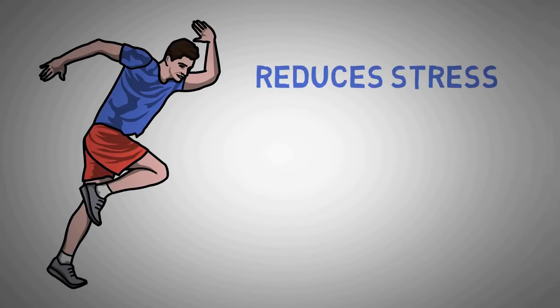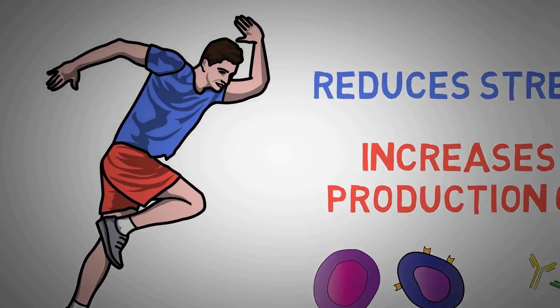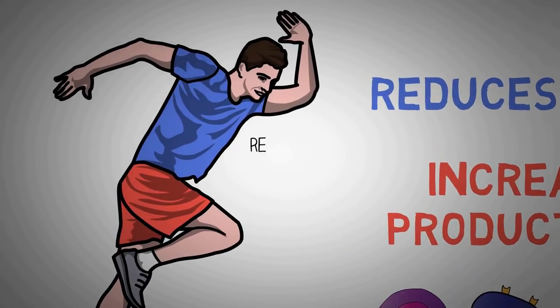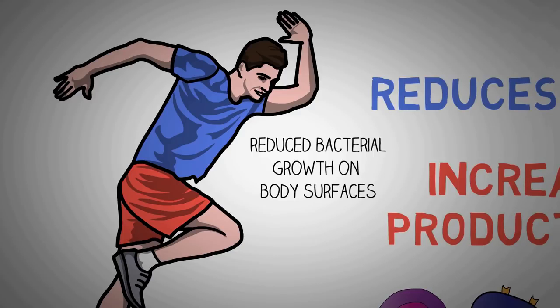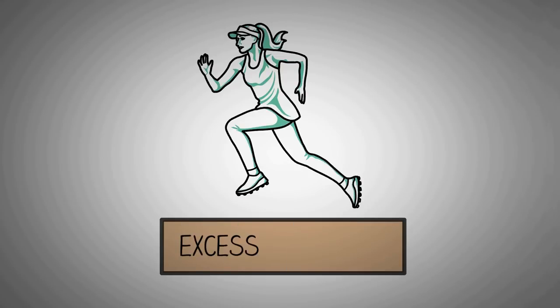Exercise reduces stress and increases the production of antibodies and white blood cells. On the other hand, when we work out, our body temperature rises, and elevation of body temperature reduces the possibility of bacterial growth on your body. Physical activity is essential for building a stronger immunity, and there is no doubt about it. But that brings us to our next point, which lowers our immunity, which is excessive exercise.